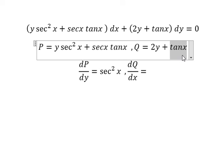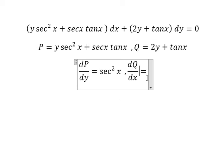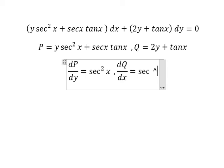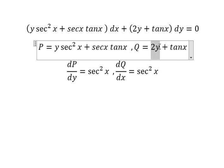The derivative of tan x we have secant squared x. This one we don't have x so we get 0.